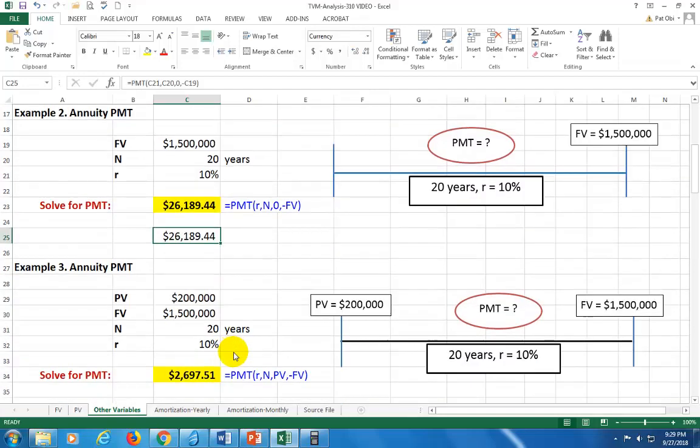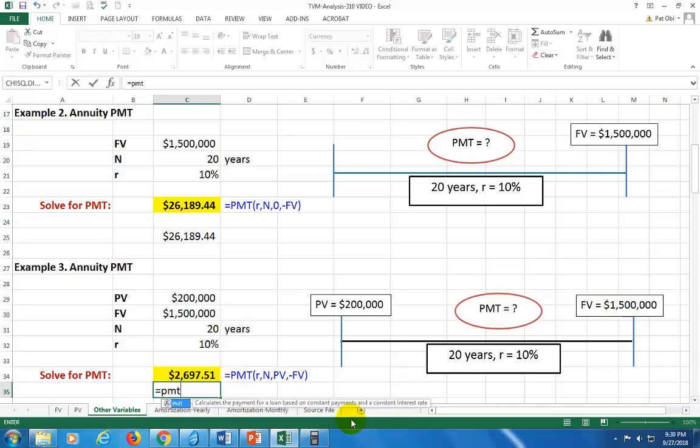And the third and final one is the case where you already have this $200,000 and you're shooting for a target of $1.5 million. What's the payment? Well, now you have the whole shebang right there. So it's going to be equal PMT and click on the rates, which is 10%. Click on the number of periods, which is 20. Comma. Click on present value. And that's your present value right there. And comma.